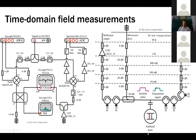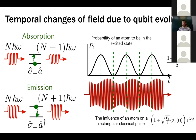At very low temperature we have the sample holder with the qubit. The output chain is different — we first need a low-noise amplifier, commercially available, to amplify the weak signal. When the signal comes out, we amplify it again and use an IQ mixer to down-convert it, then measure with analog-to-digital converters. This is exactly what we do in our lab.